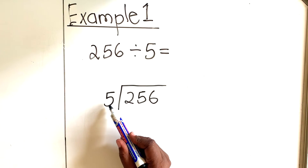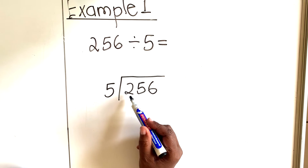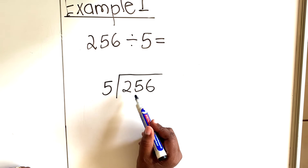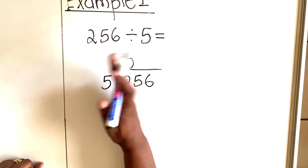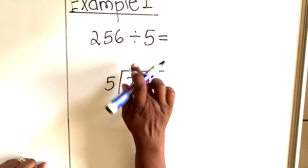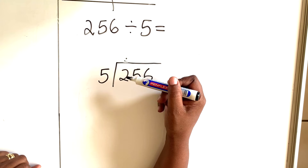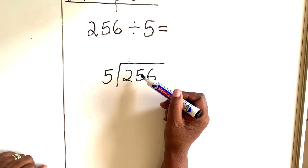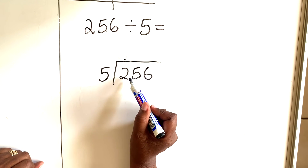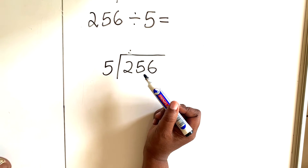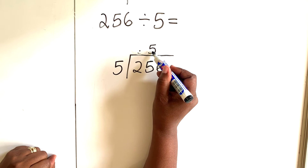You start by asking: how many fives in 2? You can't make a group of five from two, so there's none. If this were in the middle you'd write a zero, but at the beginning you can write a dot or leave it blank — it doesn't matter. Then move to the next number: you say 5 divided by 25 — how many fives in 25? Five, ten, fifteen, twenty, twenty-five — there are five groups of five in 25, so you write 5.